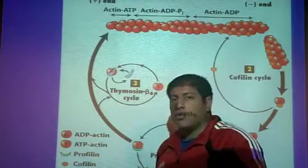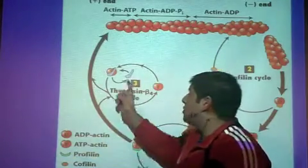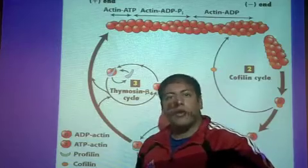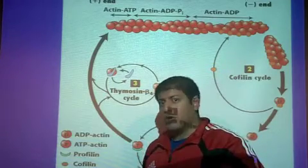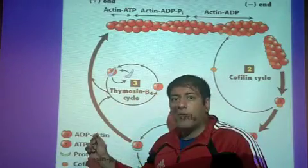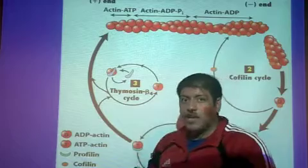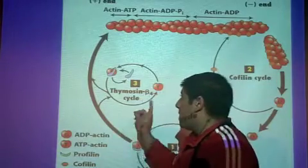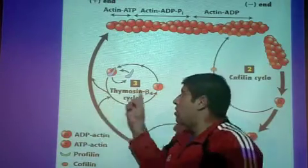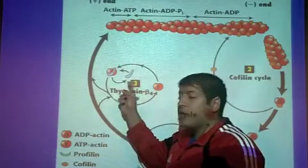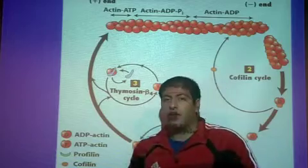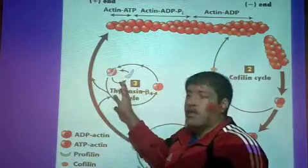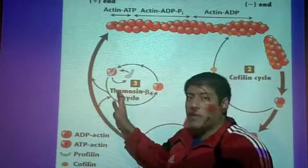In order to enter and be added to the plus end, you always come across the bouncer — the security. That's thymosin beta-4. Thymosin beta-4 is your bouncer. He's going to check: are you dressed appropriately? Do you have ATP? The thymosin beta-4 will regulate when you can go in, or when you can go on to the plus end. Because of the treadmilling effect, if there are already too many actins at the plus end, there's going to be a queue with thymosin beta-4 of G-actin monomers.